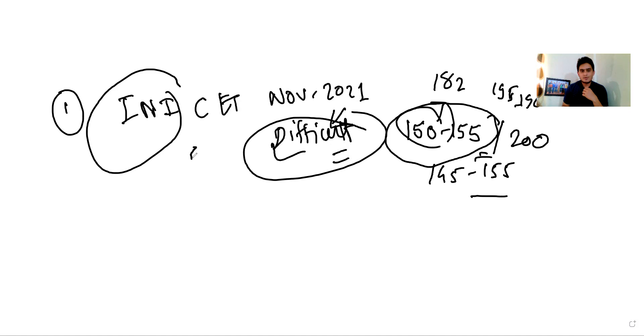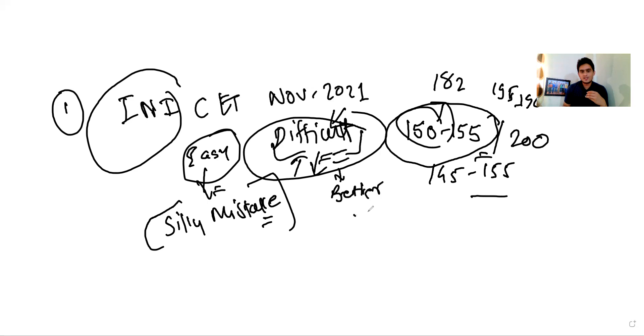So the exam was of a difficult level. How does it affect having a difficult exam or an easy exam? I will always say that I would prefer to face a difficult exam because when the exam is easy, your silly mistakes increase and the silly mistakes will affect your rank very badly. Even if you do a small one or two silly mistakes, as I have shown in my previous video, it will change your rank by thousands and literally take away your dream. So having an easy exam always costs you through the silly mistakes.